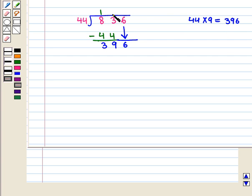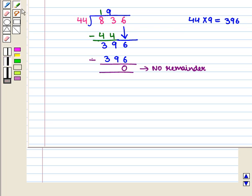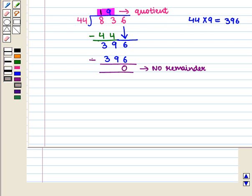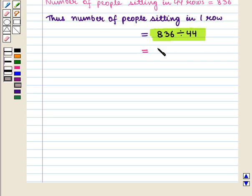So we have no remainder and in quotient we have 19. That is, 836 when divided by 44 is equal to 19. Thus we say that there are 19 people sitting in a row, which is the required answer.